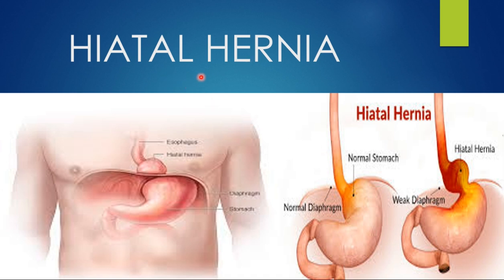Hiatal hernia is also known as stomach hernia. In this picture, you can see the stomach and esophagus. Hiatal hernia means a portion of the stomach herniates into the thorax through weak diaphragm muscles. As you can see, this is a normal diaphragm versus weak diaphragm muscles, through which the portion of the stomach herniates into the thorax.